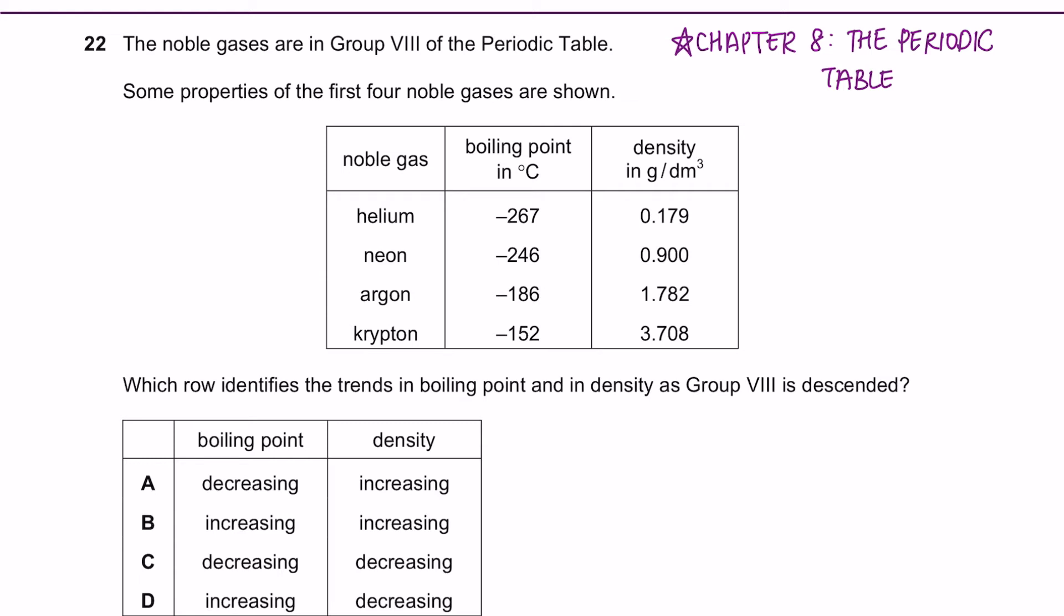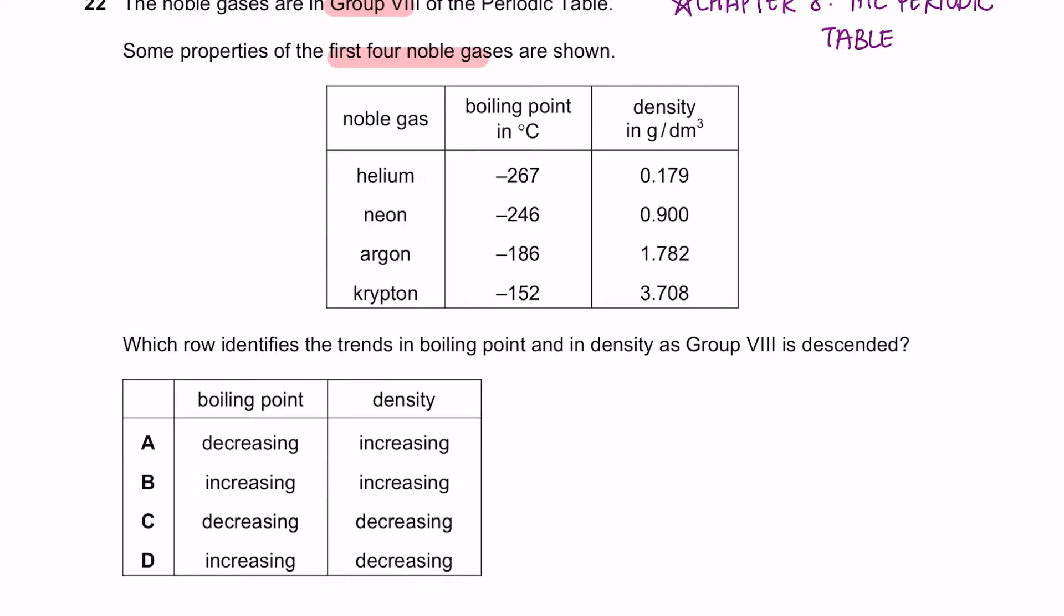Question 22 onwards is from chapter 8. The noble gases are in group 8 of the periodic table. Some properties of the first 4 noble gases are shown. Which row identifies the trends in boiling point and in density as group 8 is descended?